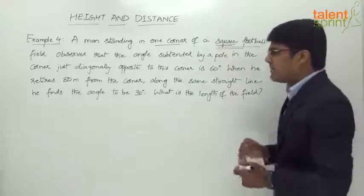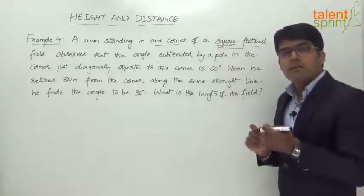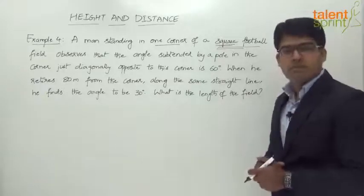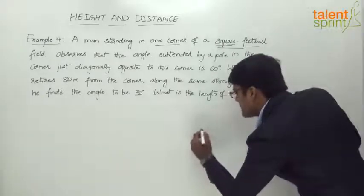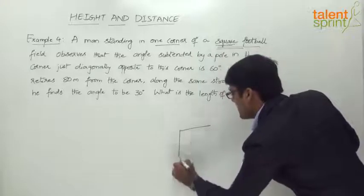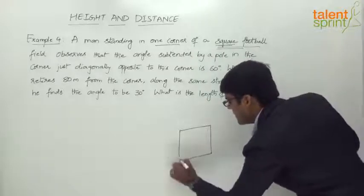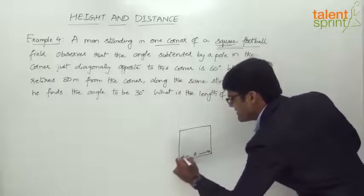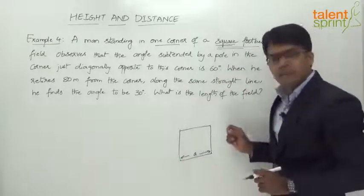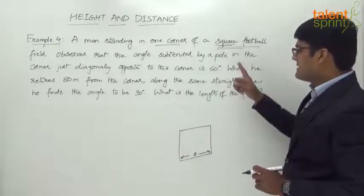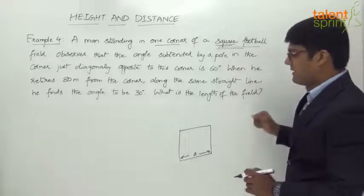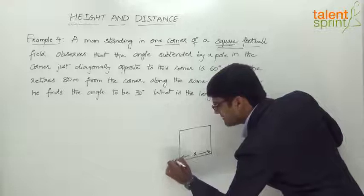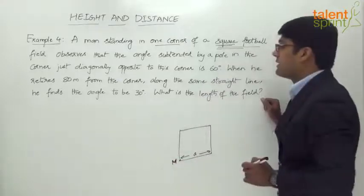So let us draw the diagram. The diagram here would play a very important, key role in our solution for this question. Let us consider a square field. This is the square field of side A — the size of the side is A. A man is standing in one corner of a square football field. Let us assume this is the corner where the man M is standing.